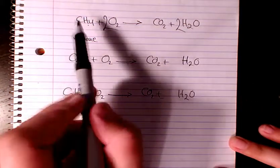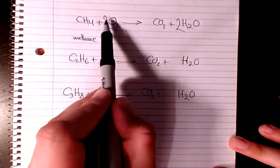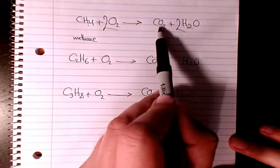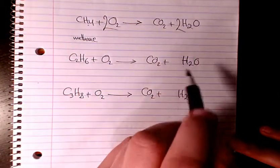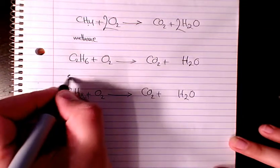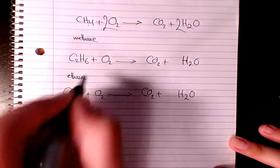So if I put two here it's going to make it four. So one mole of methane plus two moles of oxygen is going to give you one mole of carbon dioxide and two moles of water.